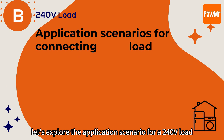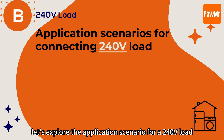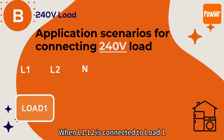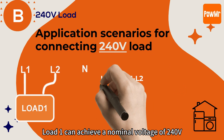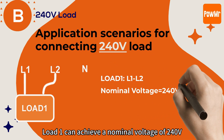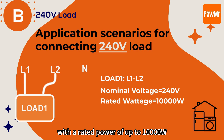Next, let's explore the application scenario for a 240V load. When L1N is connected to load 1 and the neutral wire is not connected to the load, load 1 can achieve a nominal voltage of 240V with a rated power of up to 10,000W.